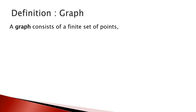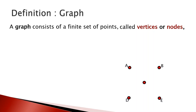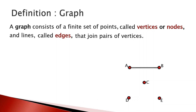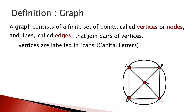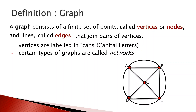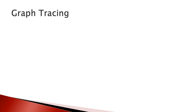Let's begin with the definition of a graph. A graph consists of a finite set of points which we call vertices or nodes. We denote them A through E with dots using capital letters to represent vertices. The lines connecting each vertex to other vertices are called edges — they join pairs of vertices. Vertices are labeled in capital letters, and connected graphs are often called networks.